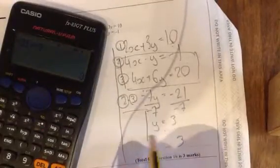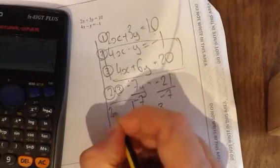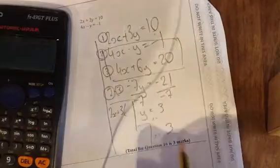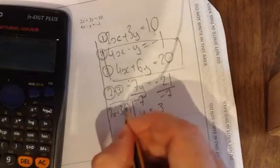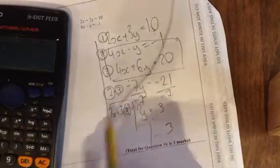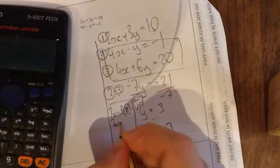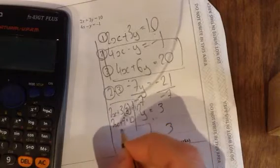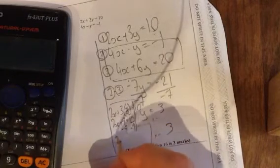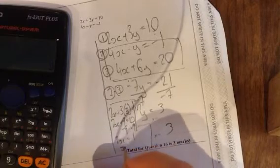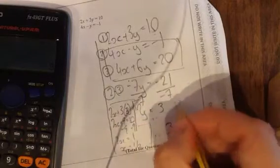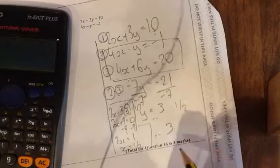Now, we need to substitute this back into one of these equations. We want a little bit of space here. So, I'm going to choose the first one. So, I've got 2x plus 3. And we know y is 3. So, it's 3 times 3 equals 10. 3 times 3 is 9. So, I've got 2x plus 9 equals 10. Minus 9 from both sides. So, I've got 2x equals 1. So, x is going to be a half.